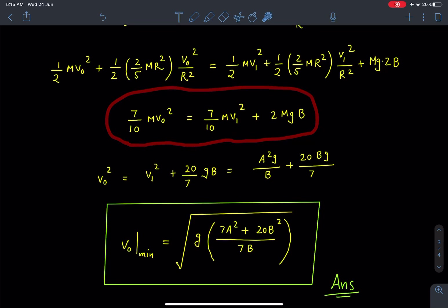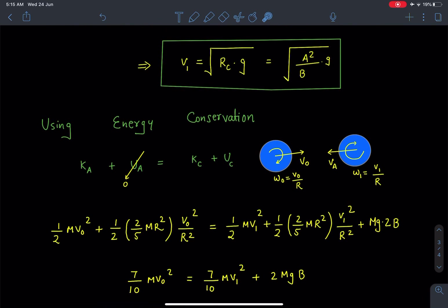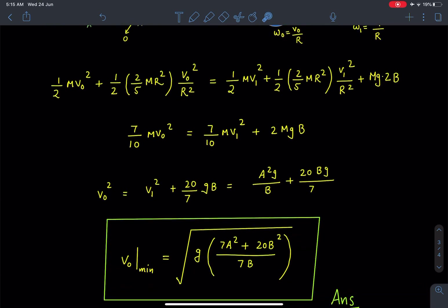Now on simplifying this, this expression will be reducing to 7MV₀²/10 = 7/10 MV₁² + 2MgB. Now we can substitute this value of V₁ which we have obtained in the previous equation. So on substituting this value, we are going to get...